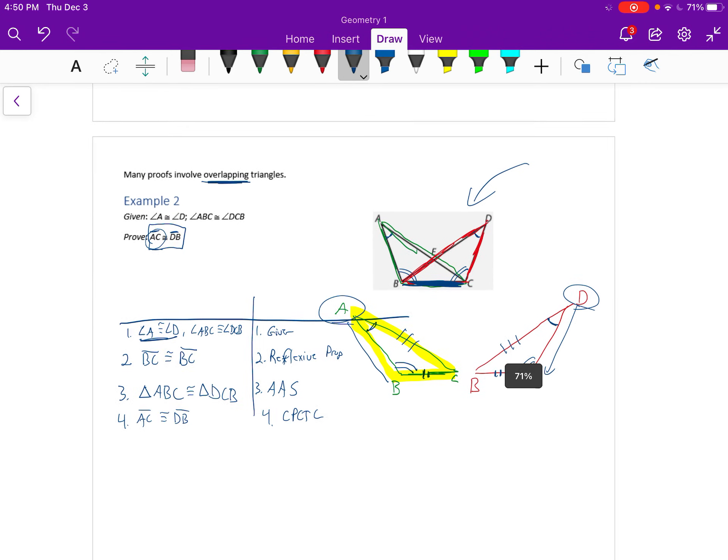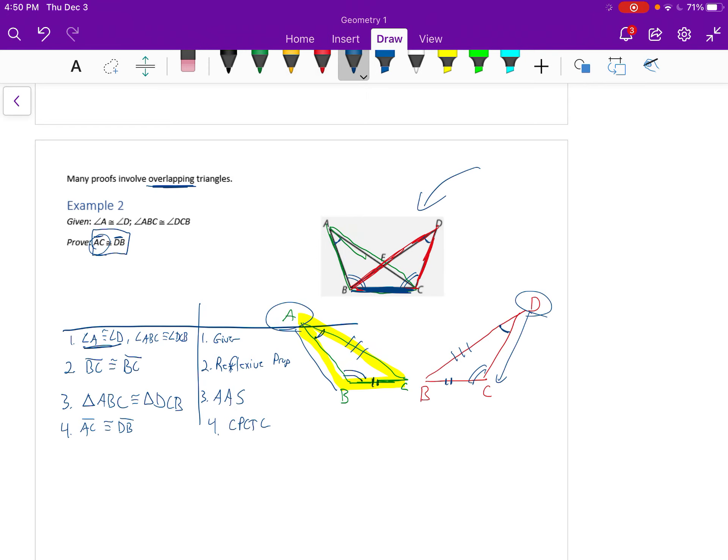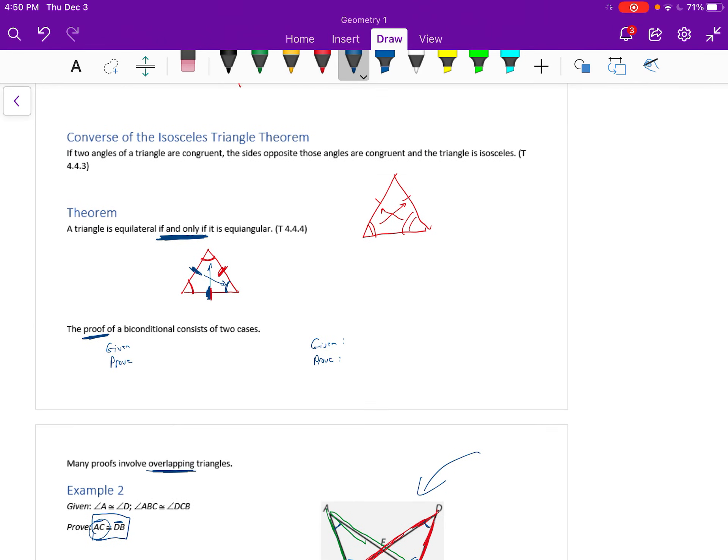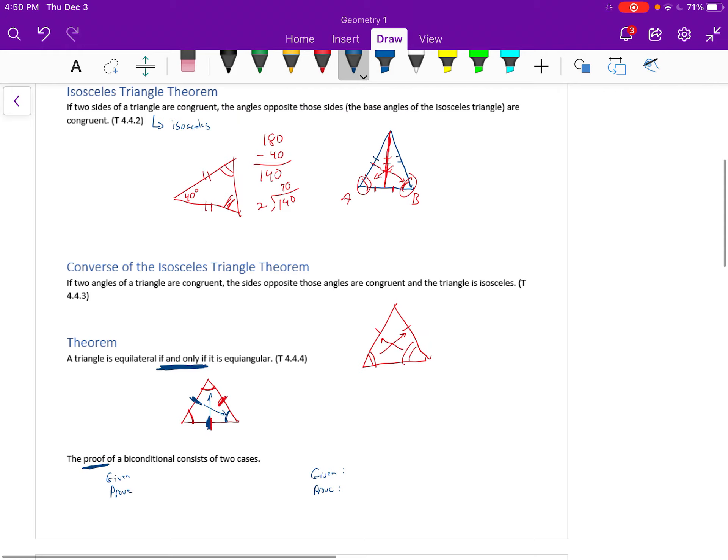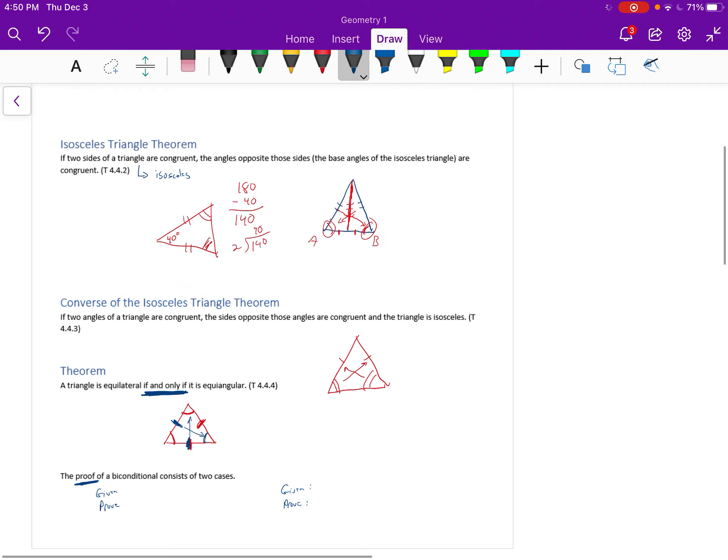So in your assignment, you're going to be doing a couple proofs. The proofs may use some of these new theorems that we learned, like the isosceles triangle theorem or the converse. And then the beginning of the homework, though, is just finding missing angles. And be aware that you'll maybe see supplementary angles sometimes. Maybe you'll see triangles and you know they add up to 180. But also you might see isosceles triangles, where if you knew one of those angles, you also know the other one is the same. So that is lesson 4.4.